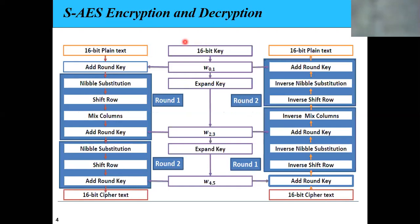This is the basic structure diagram of AES. S-AES consists of 16-bit plain text and a 16-bit key. For the initial round we need the initial key, which consists of 8 bits each for W0 and W1. After expanding, we get W2 and W3 for the first round, based on the initial key split into two sub-blocks of 8 bits. Combined, W2 and W3 form the key for the first round.